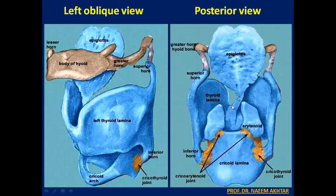These two figures show the posterior view and the left oblique view of the laryngeal cartilage. On the posterior view, you can see the epiglottis, cricoid lamina, arytenoid — two in number — and the thyroid lamina in between the two large thyroid cartilages.